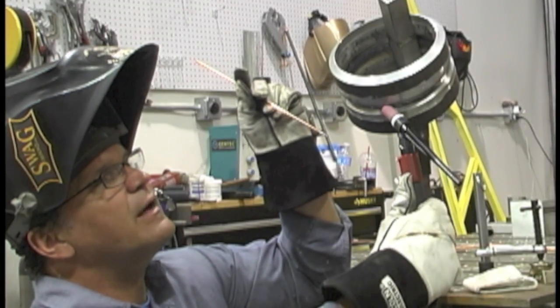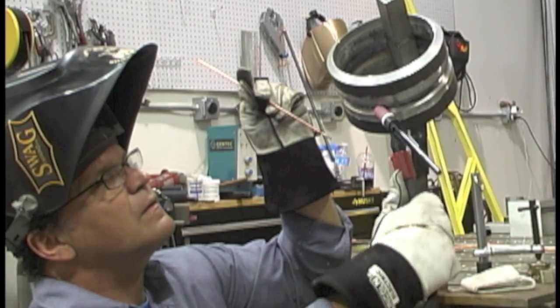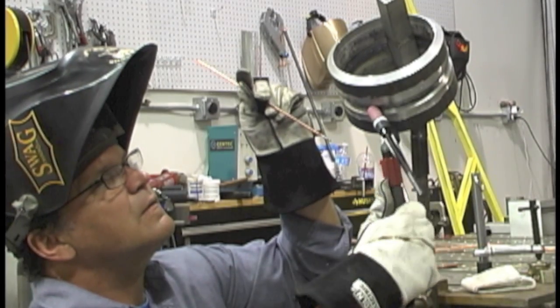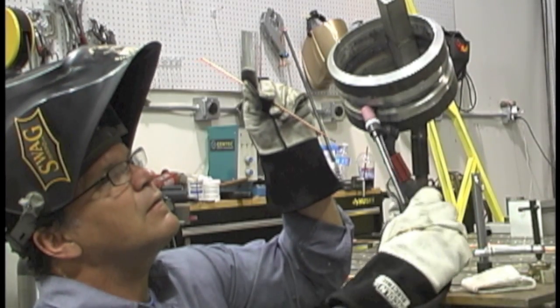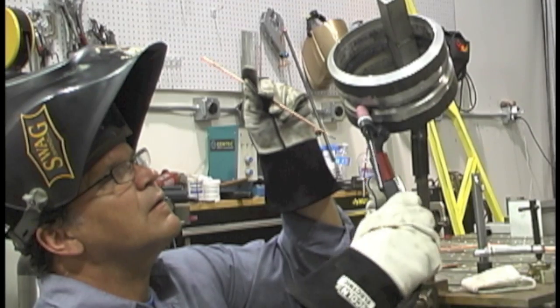And so one thing you want to do is after that root pass is let it cool. Let it cool to where it's just warm. This gives you a little edge on not disturbing the root pass.